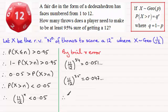So therefore the least value of n must be equal to 35, as this will give us a probability of being less than 0.05.